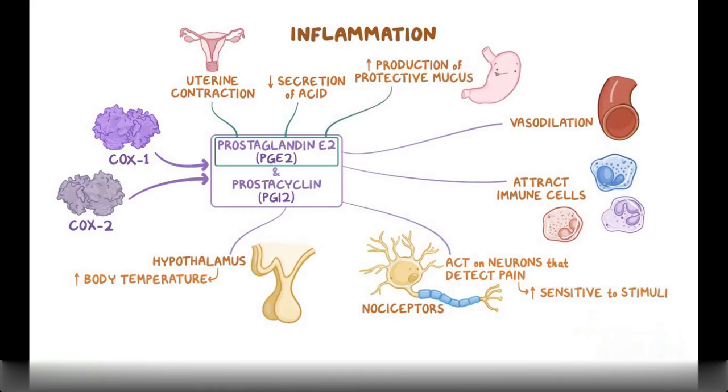In conditions such as inflammation, pain, or fever, NSAIDs can be used to inhibit cyclooxygenase and decrease the production of prostaglandins.